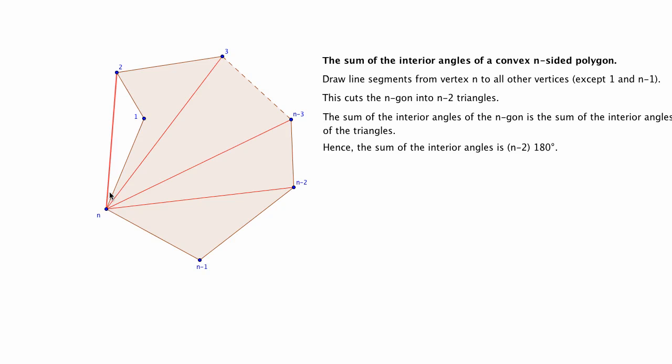Then the line that we draw from n to 2 is going to go outside of the borders of the polygon, and our argument no longer holds.